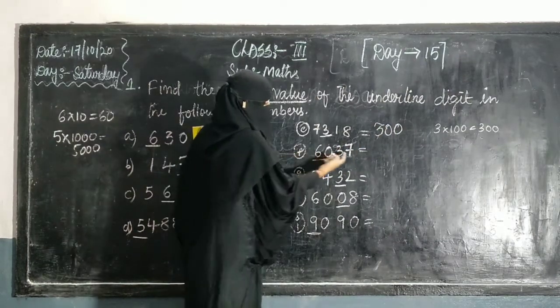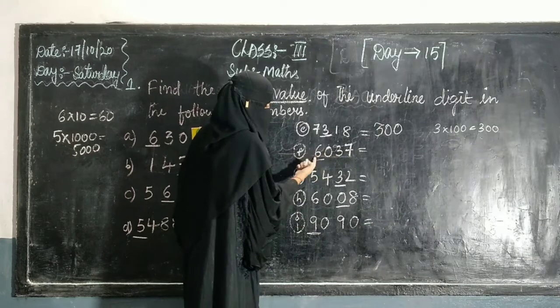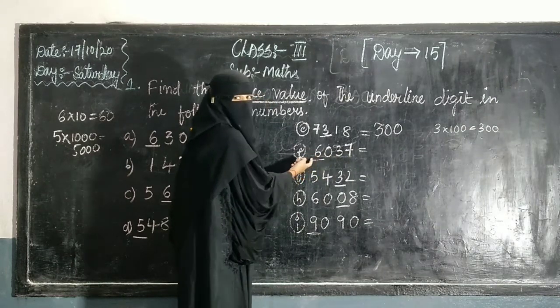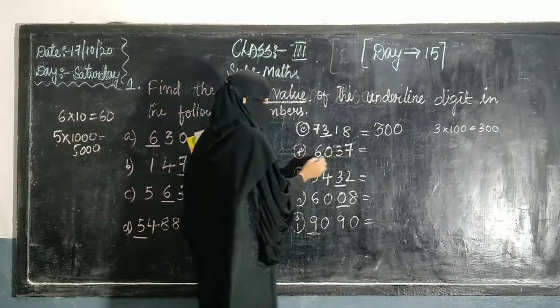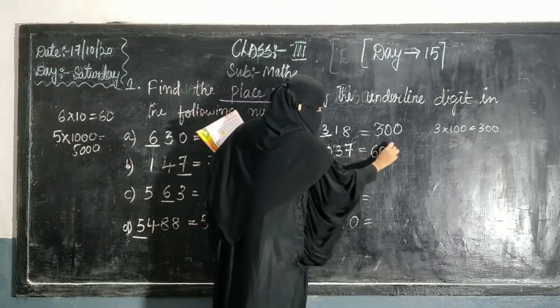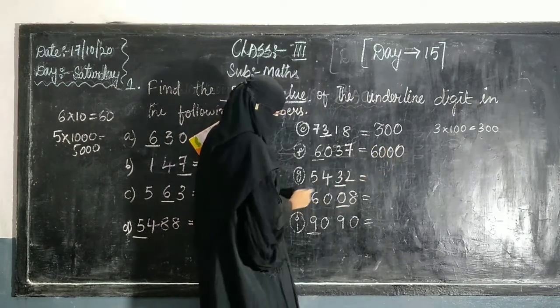Next, question F: 1 stands for 100, 1000. What is the place value of 6? It's in the 1000s place, so 6 into 1000 equals 6000.